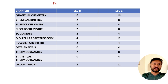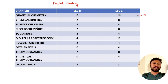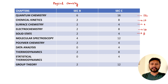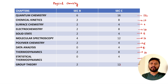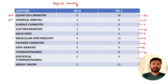Moving to physical chemistry: quantum chemistry had 6 marks in section B and 16 marks in section C — around 22 marks total. Chemical kinetics was 10 marks. Surface chemistry was 6 marks. Electrochemistry was 10 marks. Solid state was 6 marks. Molecular spectroscopy was 16 marks. Polymer chemistry was 6 marks. Data analysis was 4 marks. Thermodynamics was 10 marks. Statistical thermodynamics was 4 marks. Group theory was 14 marks.